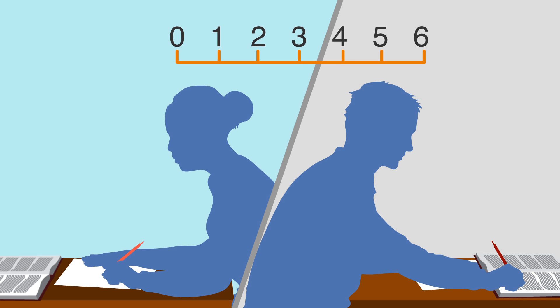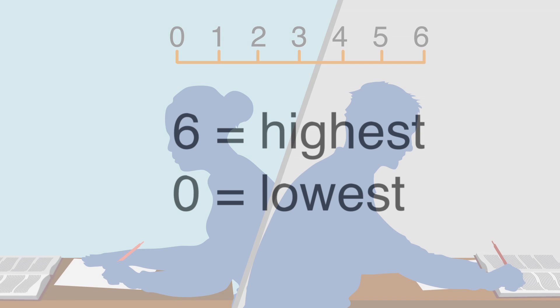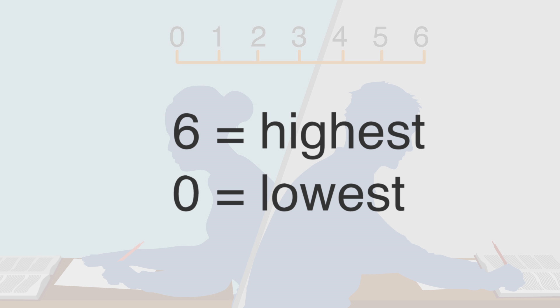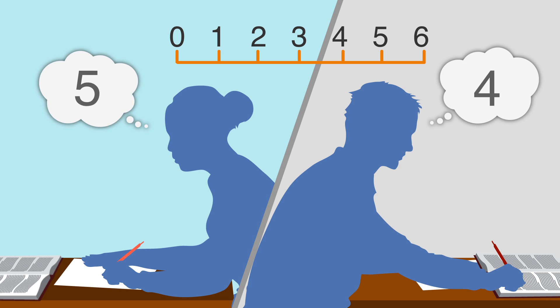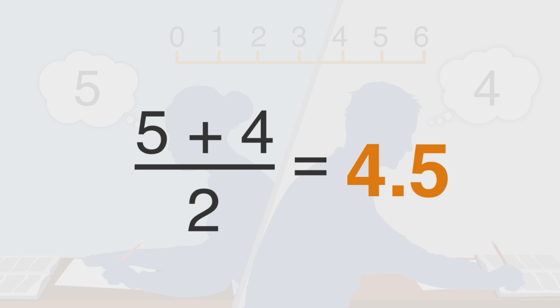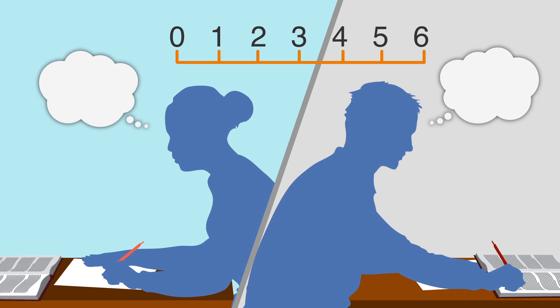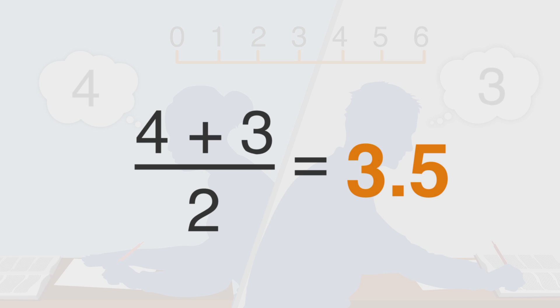Readers assign a score between 0 and 6 in single increments to your Issue essay, where 6 is highest and 0 is lowest. What you finally get is an average of these two scores, which is done by ETS. For example, suppose one reader gives your essay a 5 and the other a 4 — your final score is 4.5. The same goes for the Argument essay: suppose one reader gives your essay a 4 and the second a 3 — your final score is 3.5.